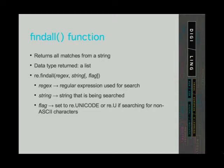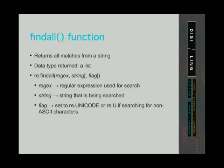findAll is a function that finds all occurrences of a pattern in a string. The data type that this function returns is a list, so all the occurrences we are looking for in a string are returned in a list. The findAll function takes three arguments: two are mandatory and the third one is optional. The first mandatory argument is the regular expression we are using for the search. The second mandatory argument is the string that we want to search. The third argument is optional, and we are going to set it to re.UNICODE, or just capital letter U, which will enable searching not only ASCII characters but also Unicode.